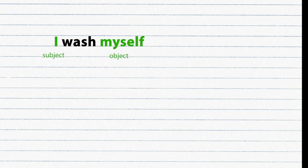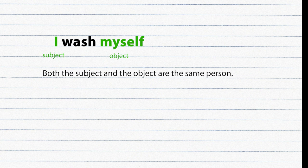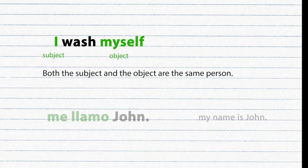Reflexive verbs. Reflexive means both the subject and the object are the same. For example: 'I wash myself' — I is the subject, wash is the verb, myself is the object. Reflexive pronouns in English are myself, yourself, herself, and so on. One of the first sentences you learn in Spanish is 'Me llamo' plus your name. For example, 'Me llamo John' — literally 'I call myself John.'